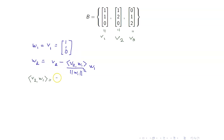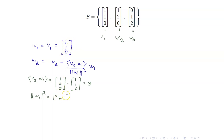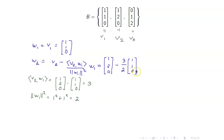The inner product of V2 and W1 is the dot product of (1, 2, 0) and (1, 1, 0), which equals 1 plus 2, so that's 3. The norm of W1 squared is 1 squared plus 1 squared, which equals 2. So therefore, W2 equals V2 = (1, 2, 0) minus 3/2 times W1, which gives us (-1/2, 1/2, 0).